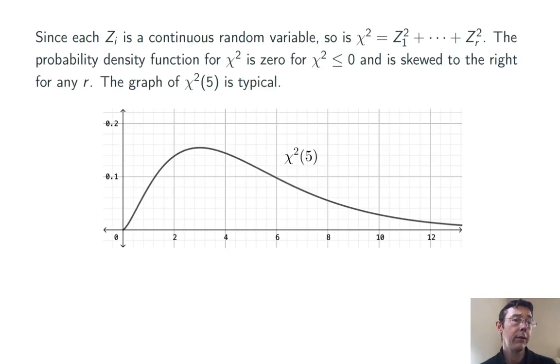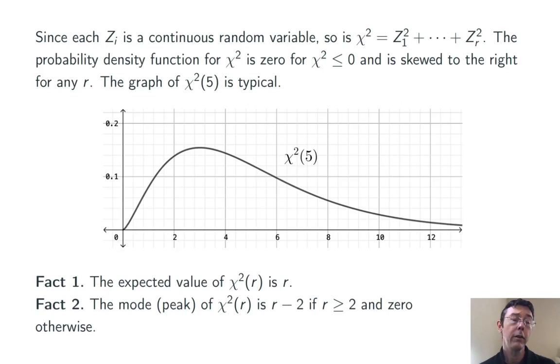Here's the graph of χ²(5). It's fairly typical for a chi-squared distribution when r is fairly small but not equal to 0 or 1. A couple of quick facts. First of all, the expected value of χ²(r) is always r. Second of all, the mode or peak of a chi-squared distribution is r minus 2, if r is at least 2, and 0 otherwise.